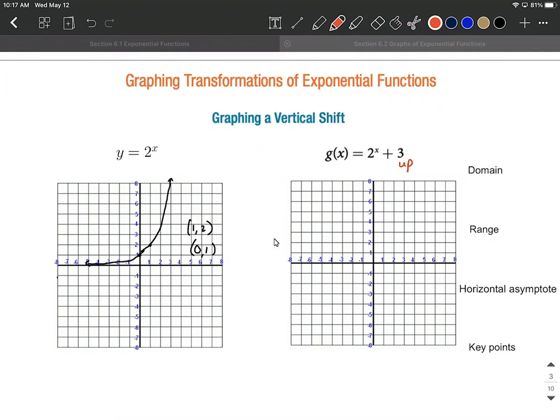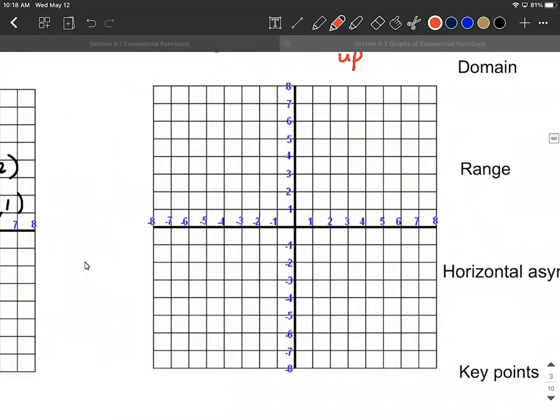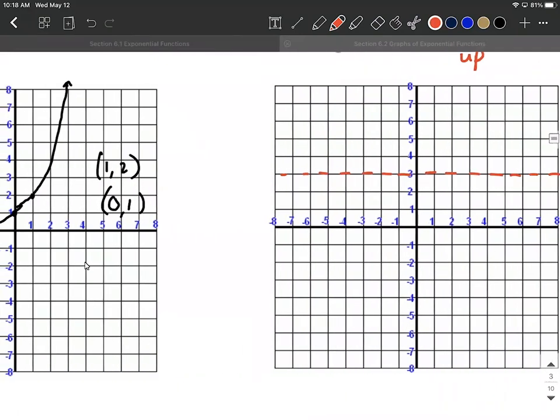So what I want to do is I'm trying to graph this is I need to shift our horizontal asymptote and each of these key points up 3 units. So first of all, our horizontal asymptote was at the x-axis at y equals 0. It's going to move up 3 units to y equals 3. I'm going to indicate that with the dashed line going on here.